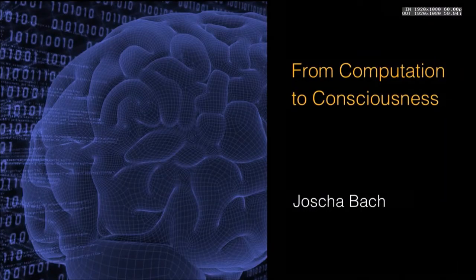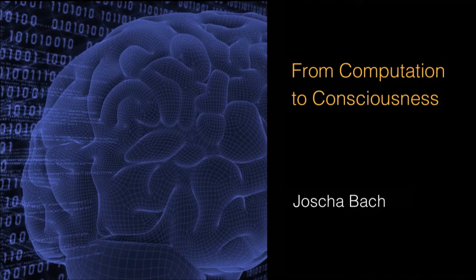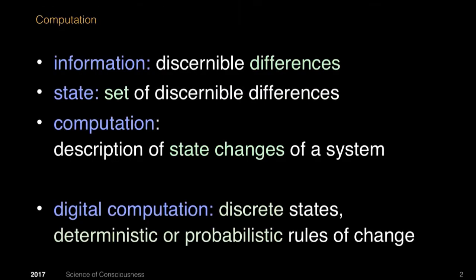I think the best contribution of the last century to the sciences was the discovery of the concept of computation. Computation treats arbitrary systems as sets of discernible differences. The fancy name for discernible differences in science is information. We can group these discernible differences in states and describe an arbitrary system by how these states change. The way they change is usually described as some kind of transition function. The description of a system using a transition function and states is the most general way to capture the notion of computation.